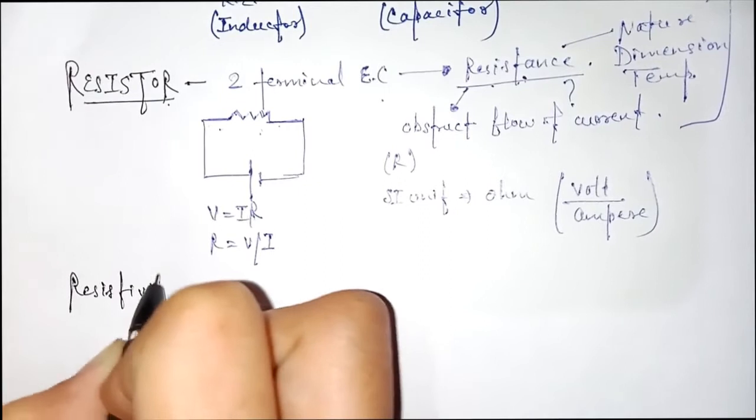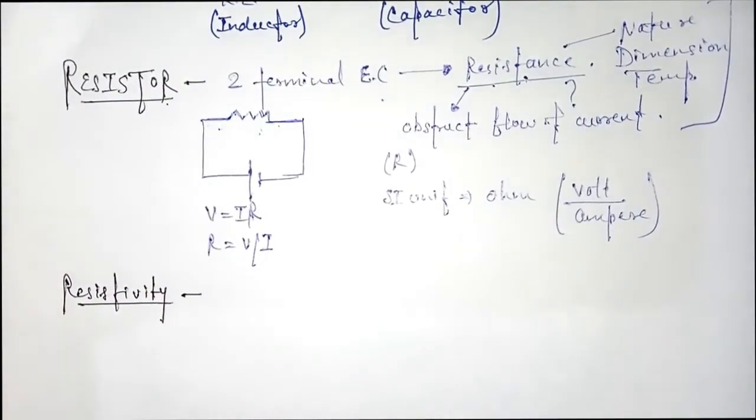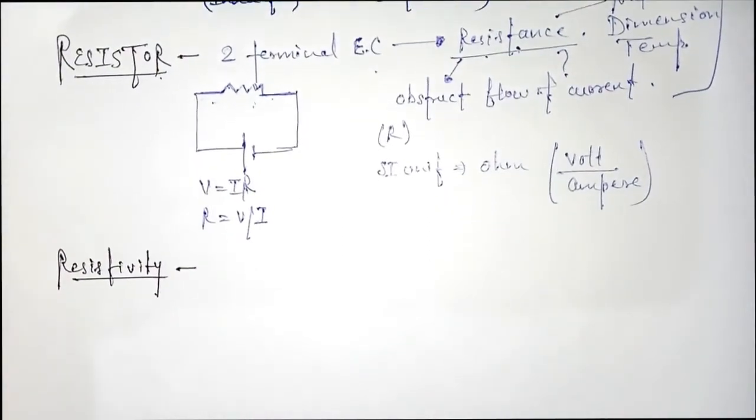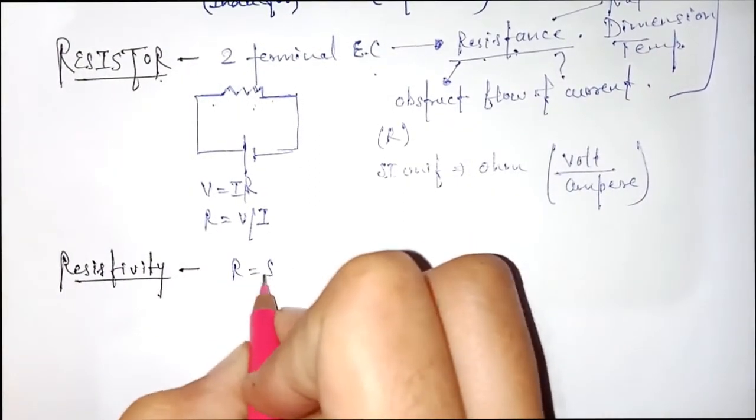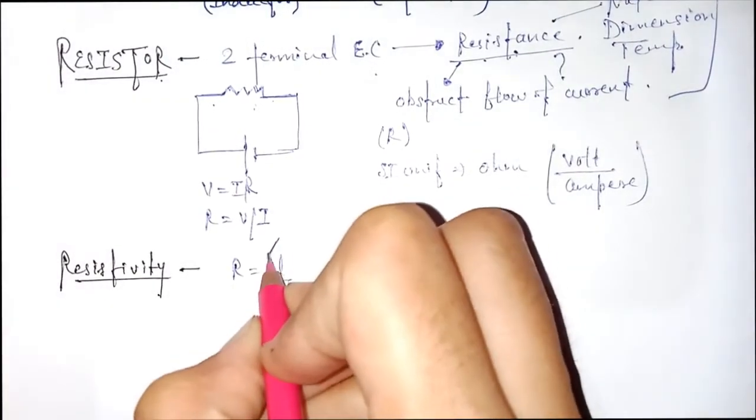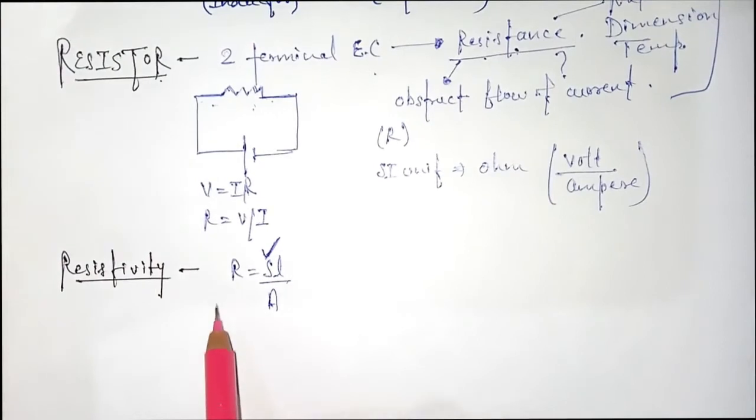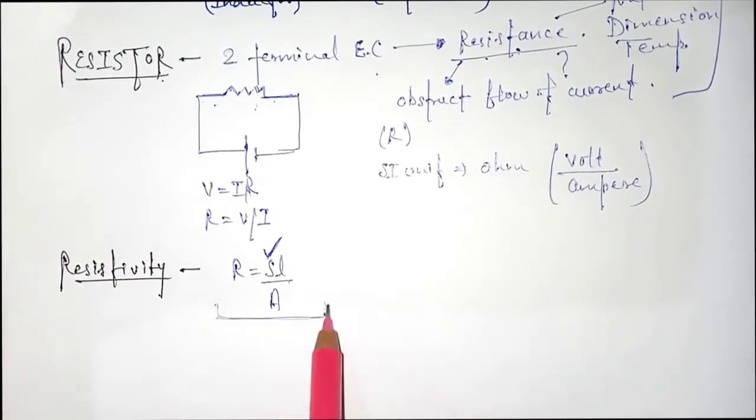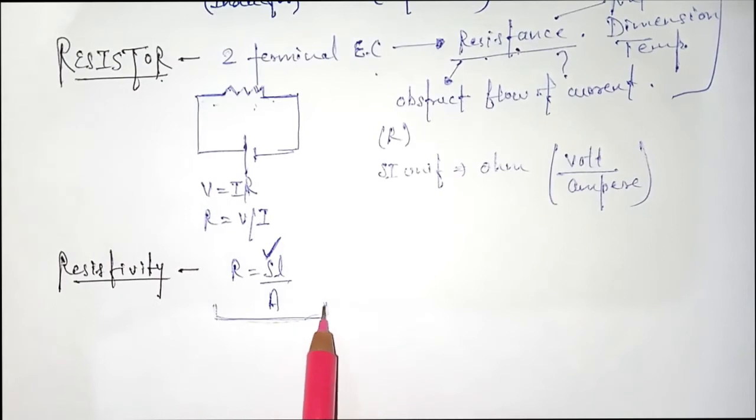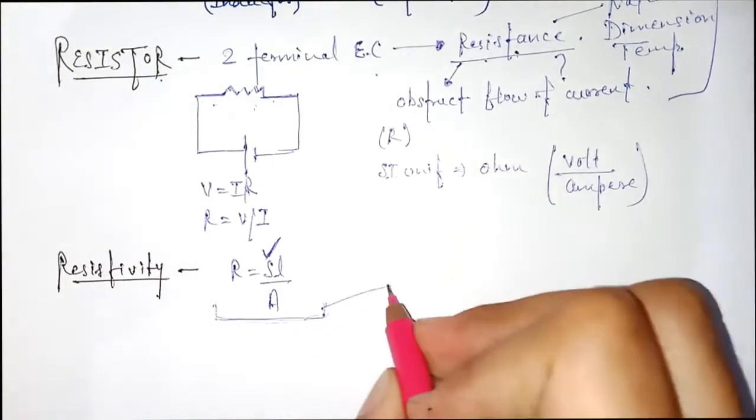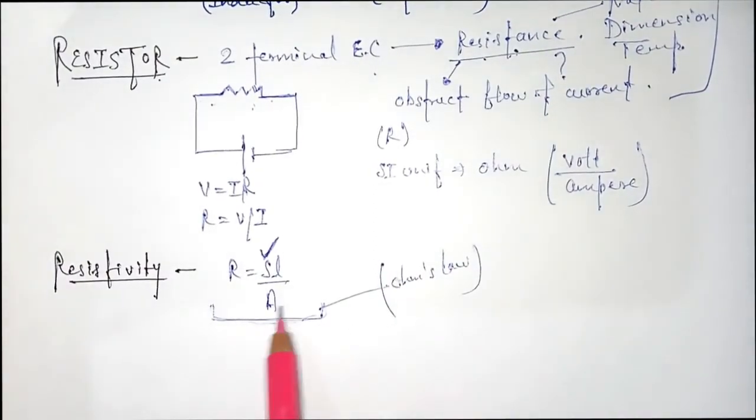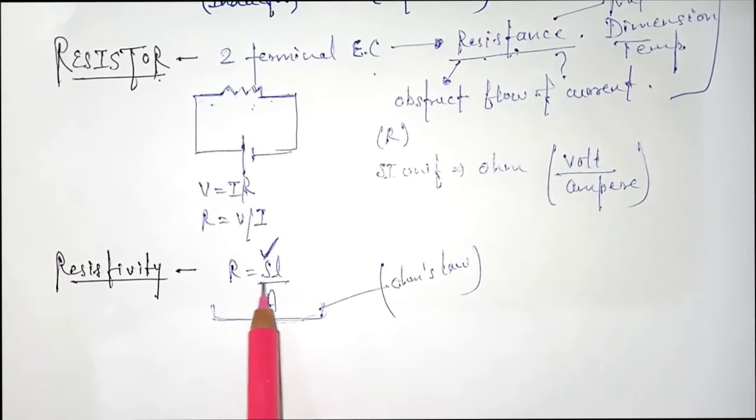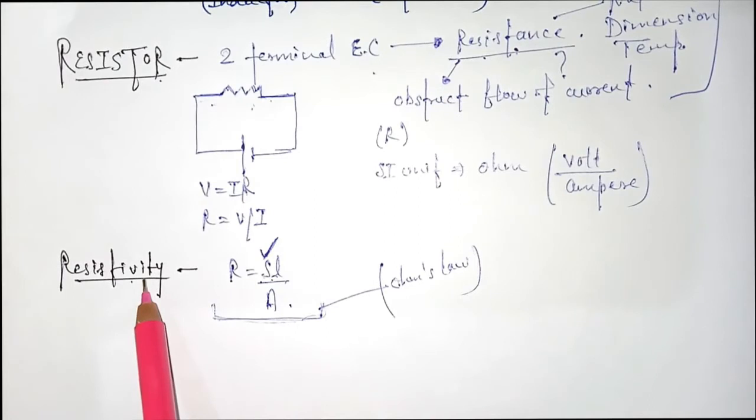Resistivity is also known as specific resistance. It is equal to R is equal to rho L by A, where rho is the resistivity. From where these formulas come, I will teach you in Ohm's law lecture. For now, we just learn that R equals rho L by A, where rho is the resistivity or specific resistance.